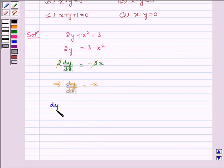Now dy by dx at x equals 1 is equal to minus 1, which is equal to the slope of tangent.